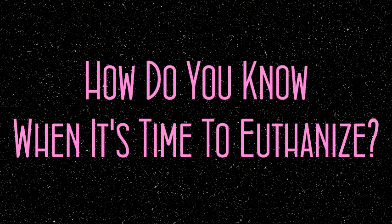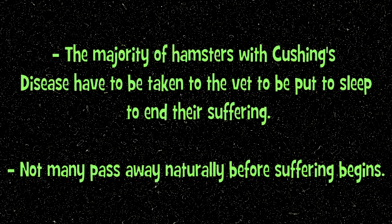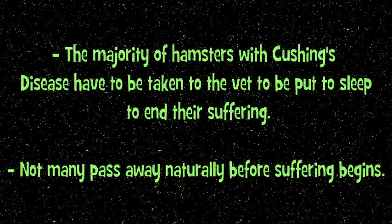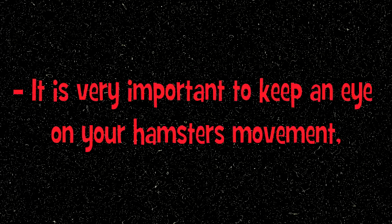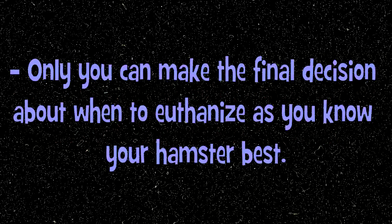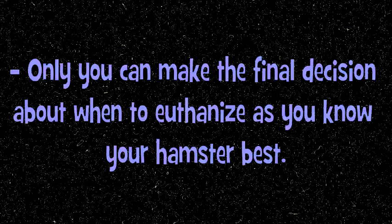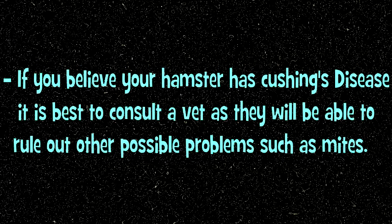How do you know when it is time to euthanase your hamster? The majority of hamsters with Cushing's disease have to be taken to a vet to be put to sleep to end their suffering, as not many will pass away naturally before the suffering begins. It is very important to keep an eye on your hamster's movement — if the hamster becomes too impaired, such as having difficulty walking, then it is kinder to euthanase rather than letting them suffer. Only you can make the final decision about when the right time is, as you know your hamster best. If you believe your hamster has Cushing's disease, it is best to consult a vet as they will be able to rule out any other possibilities such as mites.